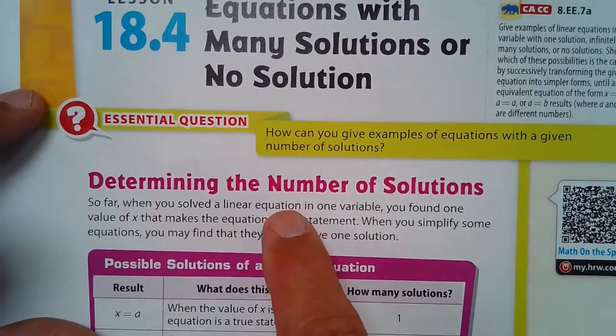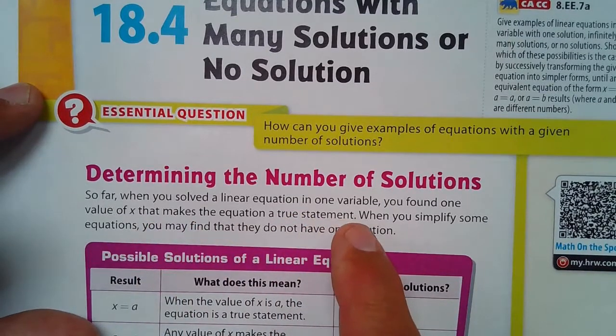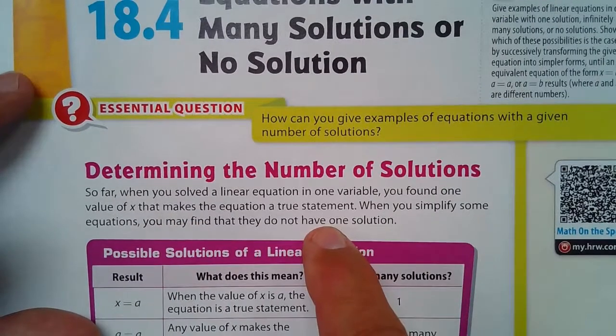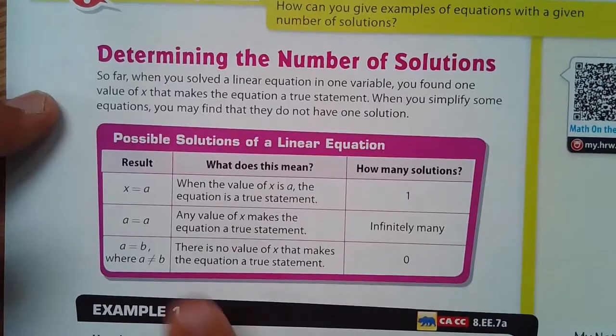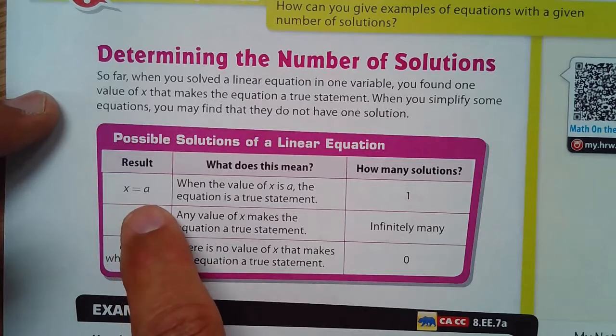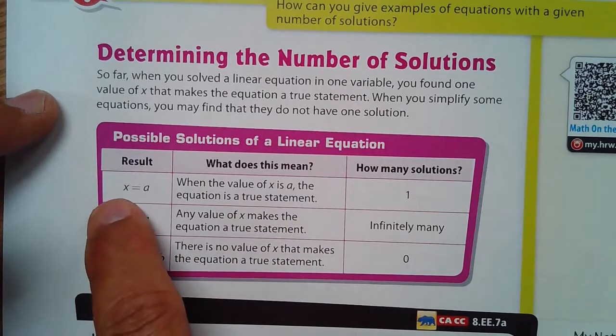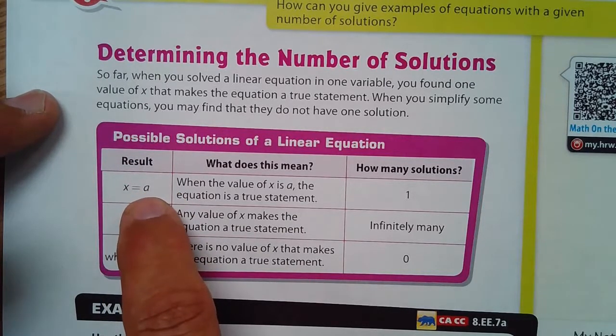We're going to determine the number of solutions. So far, when you solve a linear equation in one variable, you found one value of x that makes the equation a true statement. When you simplify some equations, you may find they do not have one solution. So when you have x equals a, what does that mean? Well, when the value of x is a, the equation is a true statement. And in this situation, a would be a number, like x equals 5 or x equals 2 thirds, whatever it is. You have one solution.